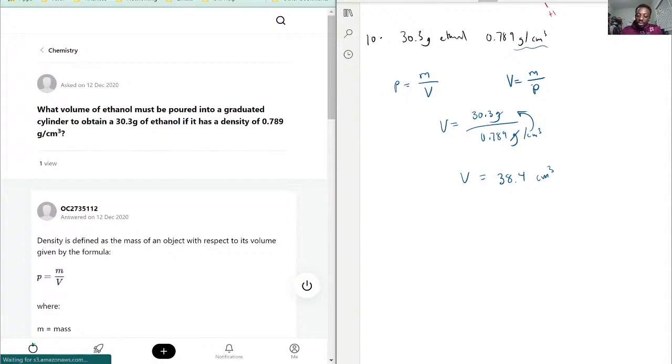Now, if the assumption was, which is key, assume one milliliter is equal to one centimeter cubed, we can then say our answer is 38.4 milliliters.